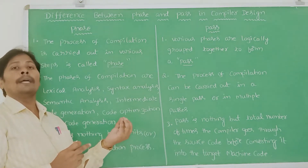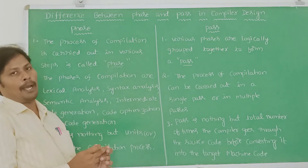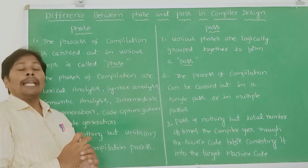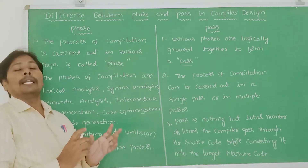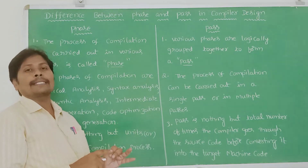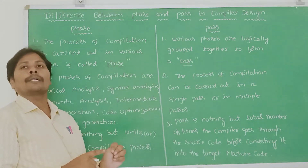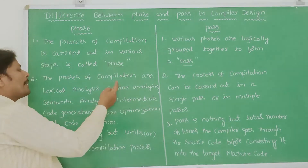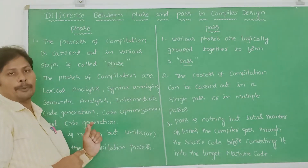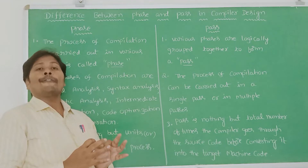Whatever phases are there in the compilation of the source program, those phases are grouped together to form a pass. The second point: the phases of compiling a source program are lexical analysis, syntax analysis, semantic analysis, intermediate code generation, code optimization, and code generation. These are the main six phases for compiling the source program.